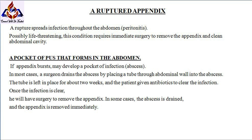In most cases, a surgeon drains the abscess by placing a tube through the abdominal wall into the abscess. The tube is left in place for about two weeks, and the patient is given antibiotics to clear the infection. Once the infection is clear, surgery is performed to remove the appendix. In some cases, the abscess is drained and the appendix is removed immediately.